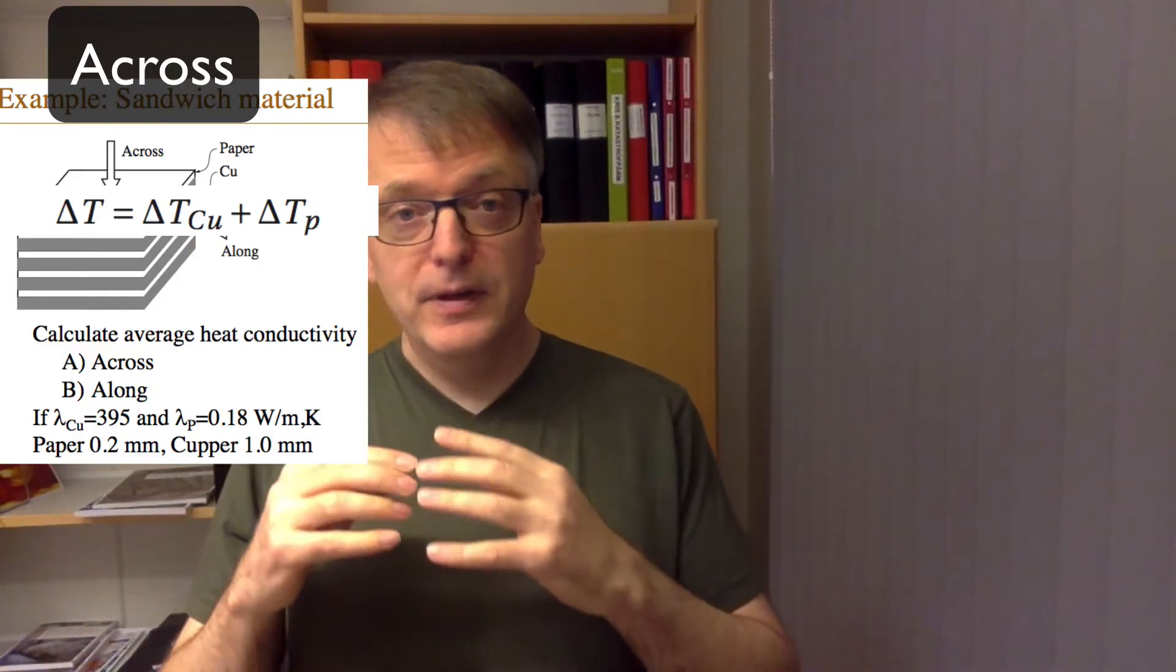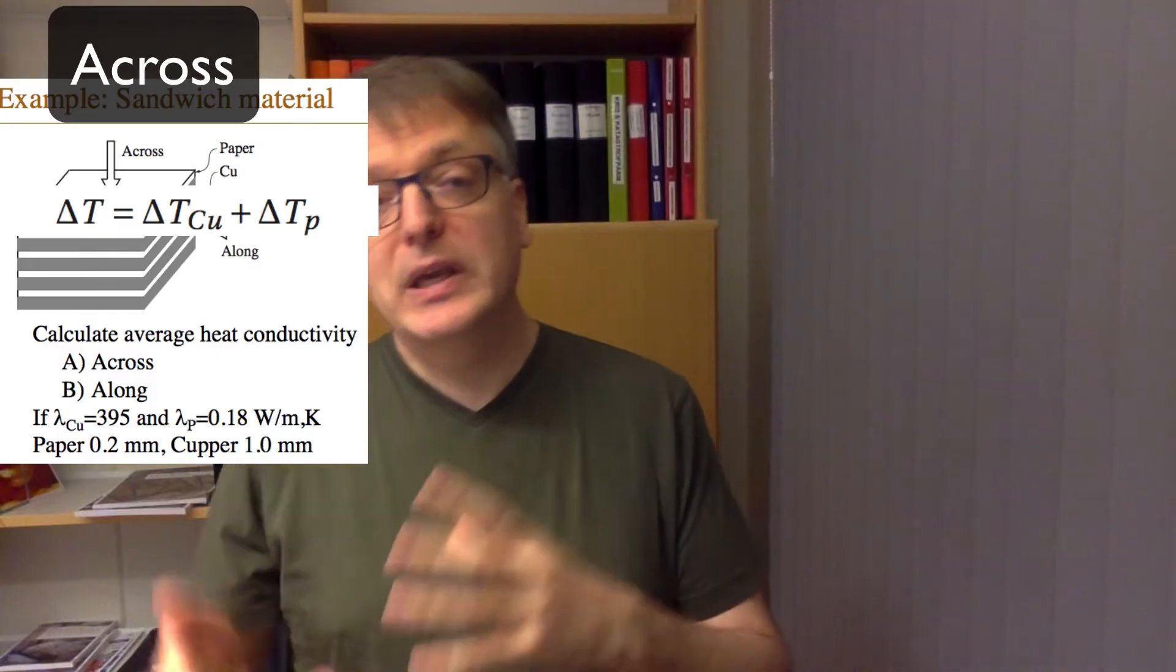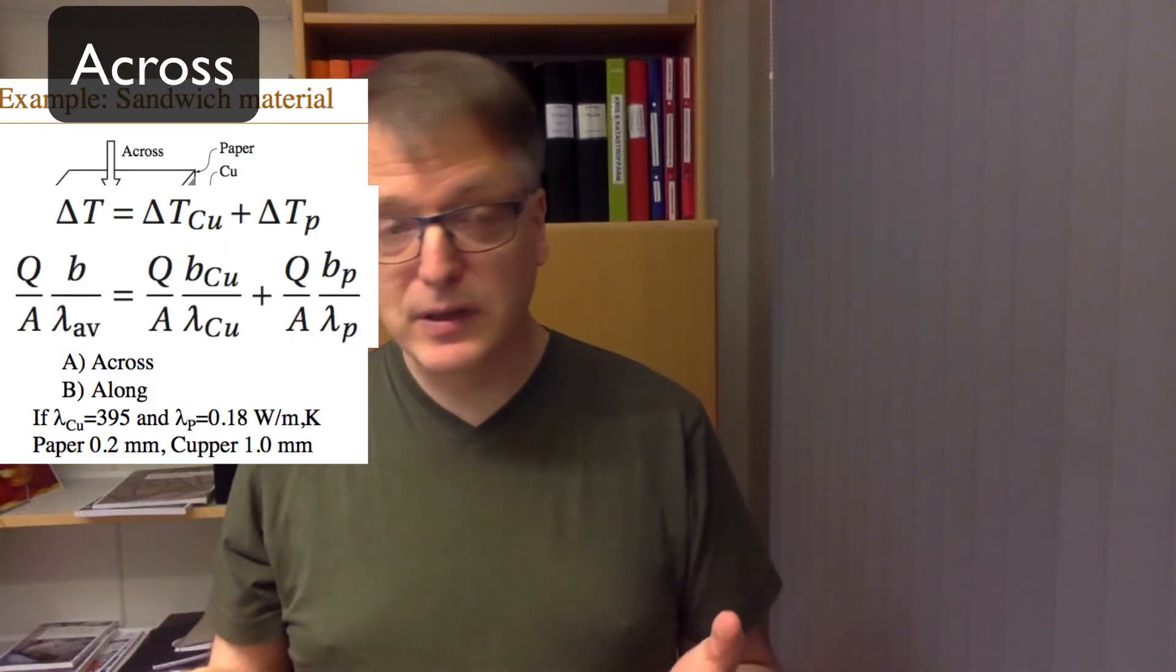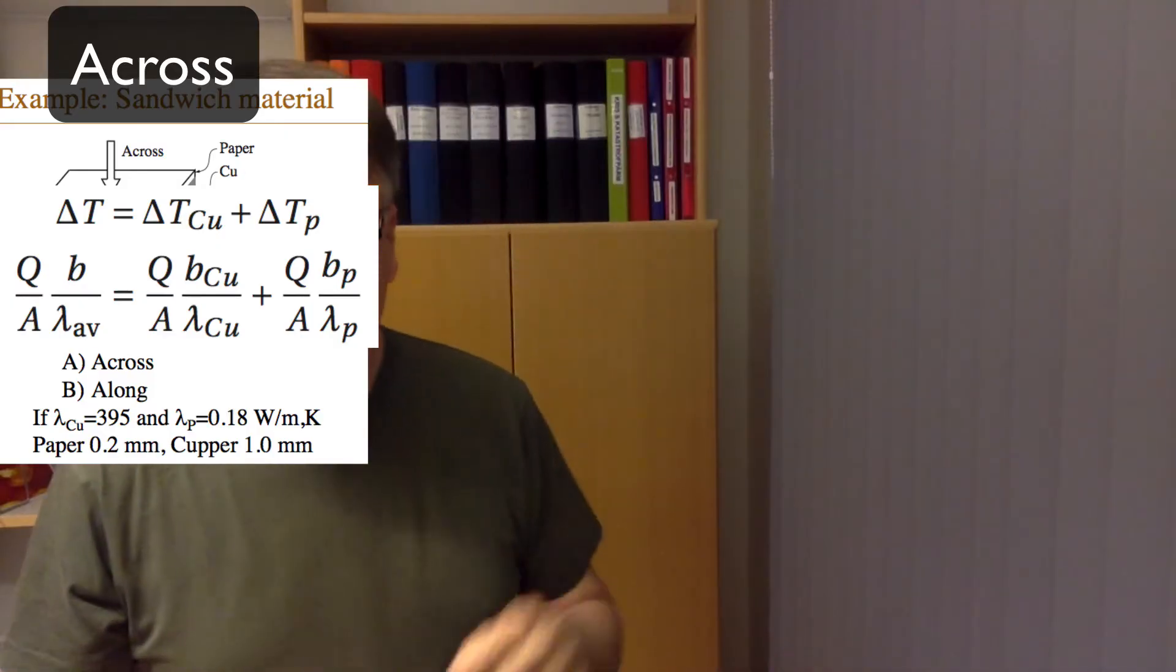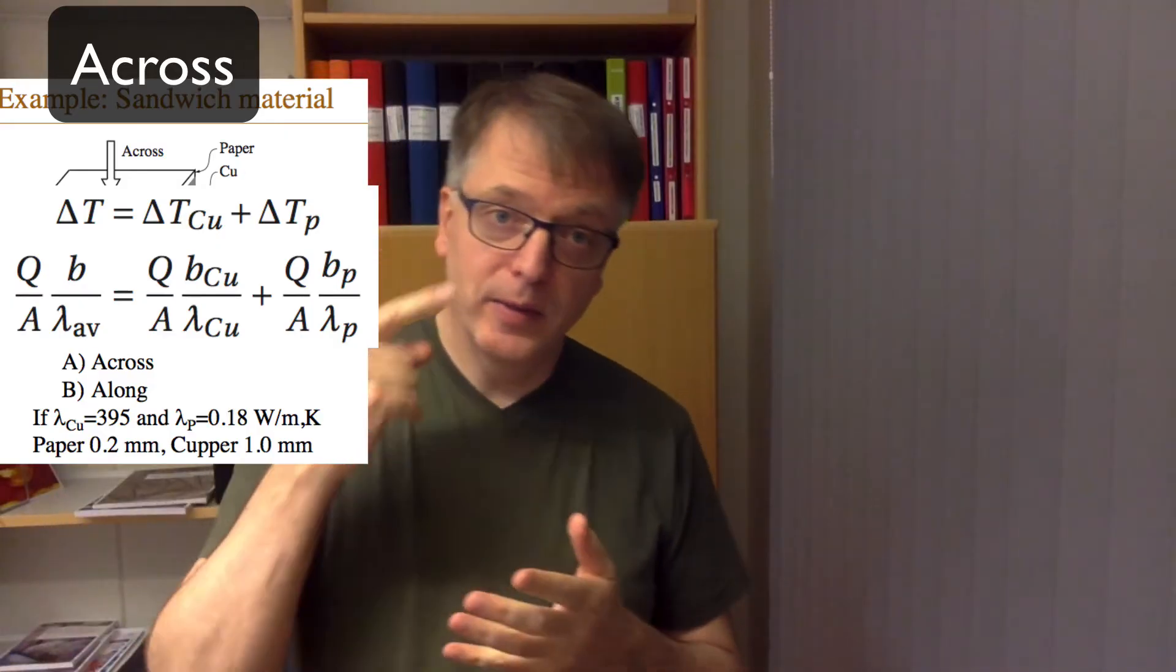So if ΔT equals ΔT_copper plus ΔT_paper, we can rewrite that using the equations for conductivity as Q divided by A times the thickness divided by the conductivity for the average and for the different materials.